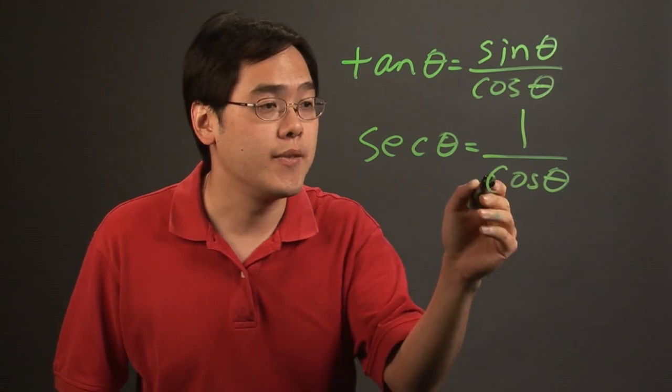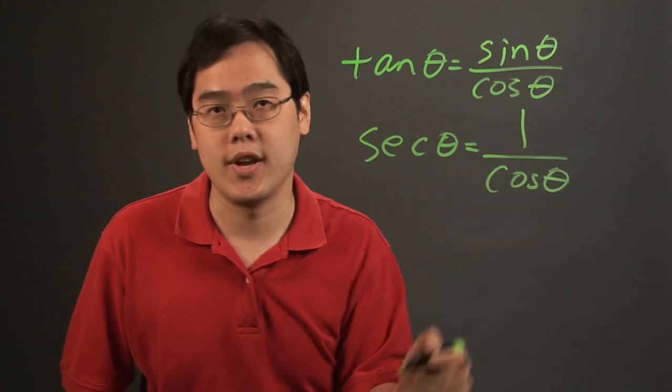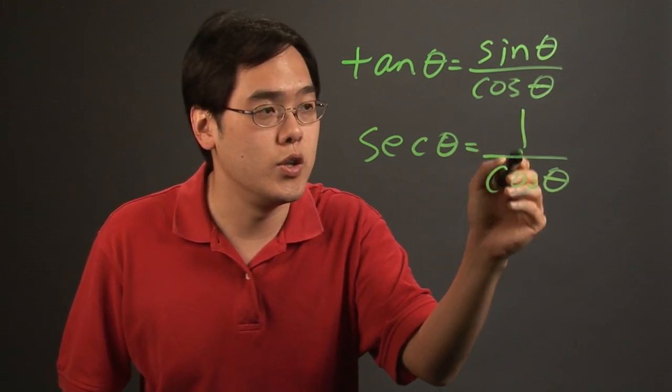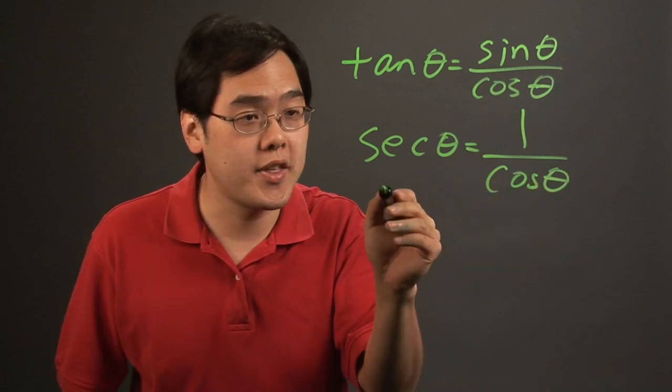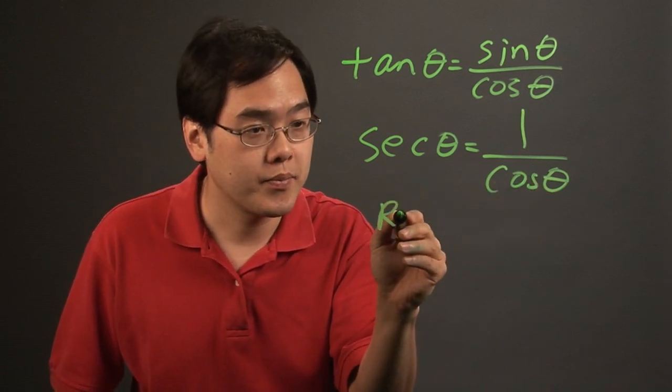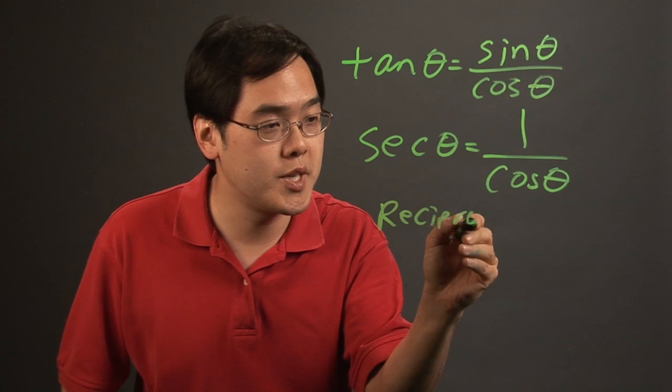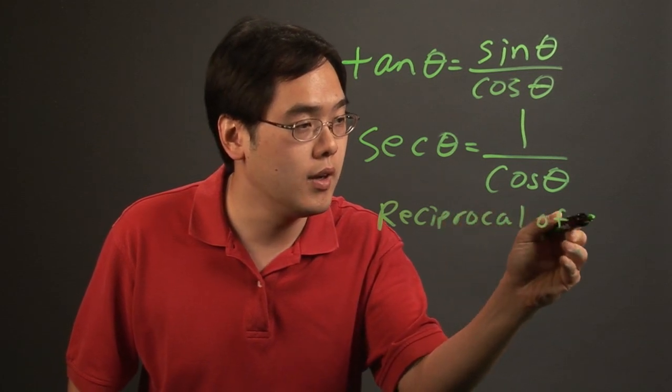So if you know the cosine of an angle, it's 1 over that, or another way to think about it is secant of an angle is the reciprocal of cosine.